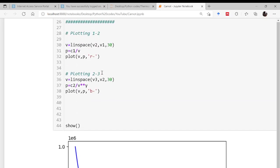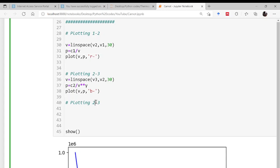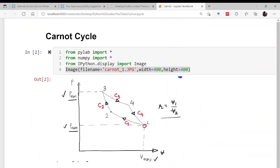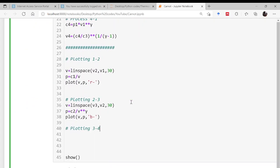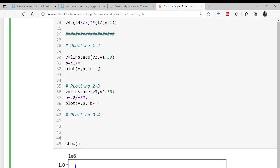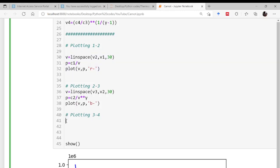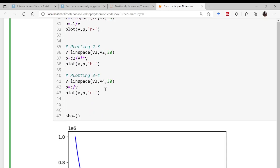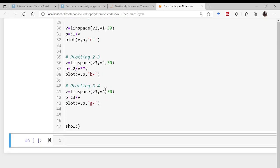Now comes the process 3 to 4. 3 to 4 is isothermal process. So we know V3, we know V4, I also know C3. So this is very much similar to this. Why not copy? This is varying from minimum volume to this and the pressure is varying. Now constant here, remember this is very important, constant here is C3. Let me change the color to green. Done.